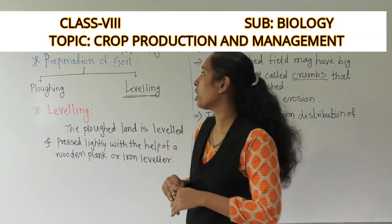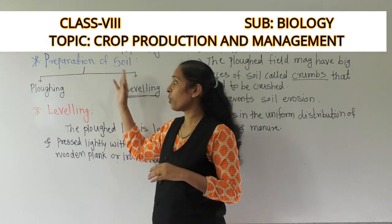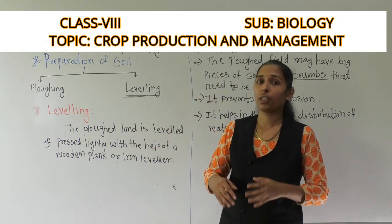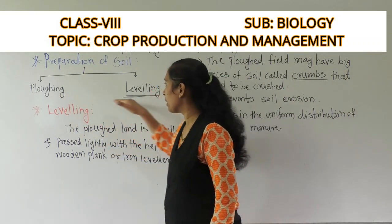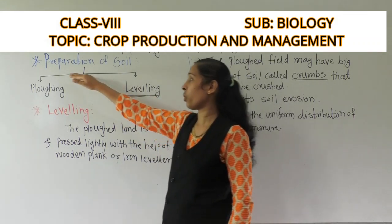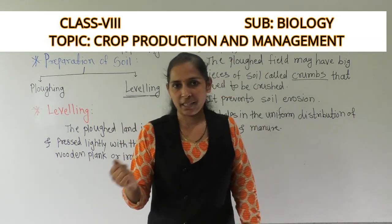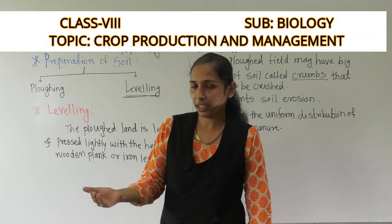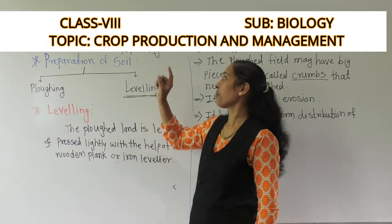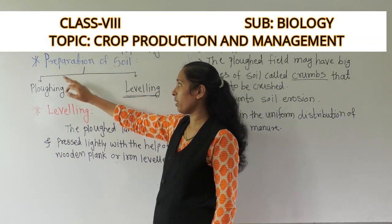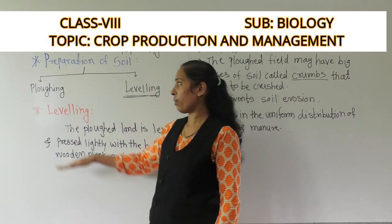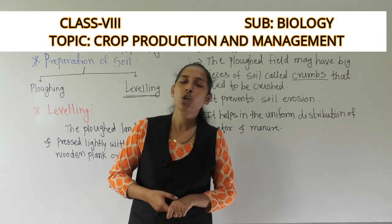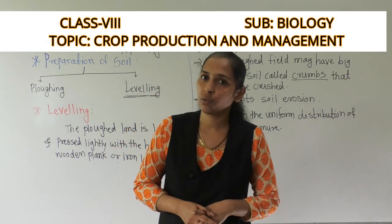So the leveling process is also important for preparation of soil. In summary, for preparation of soil we plow the soil with a plow and level it with a leveler. By performing both these agricultural activities, the soil is ready for the next agriculture practices. Today we discussed the first practice of agriculture — preparation of soil — covering both plowing and leveling. We will discuss the next agriculture practices in our next video. Thank you.